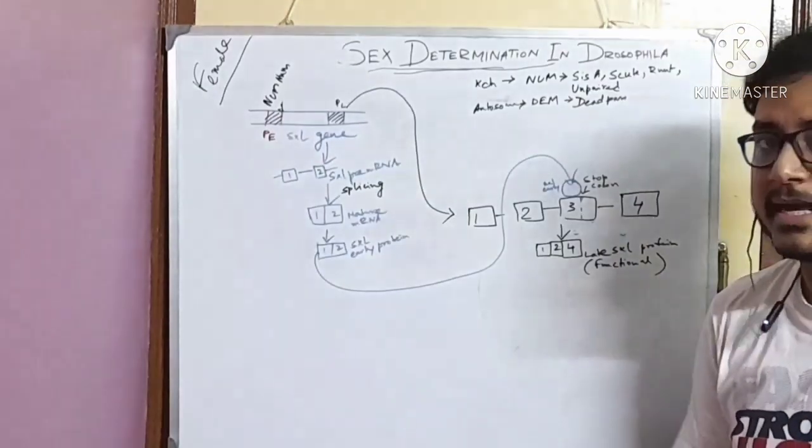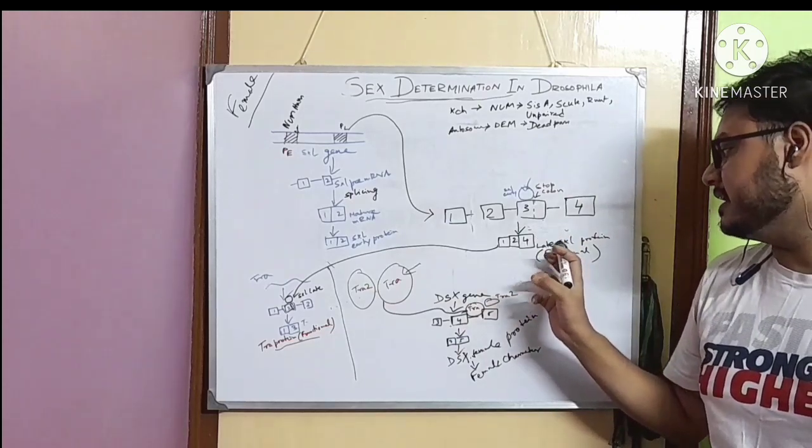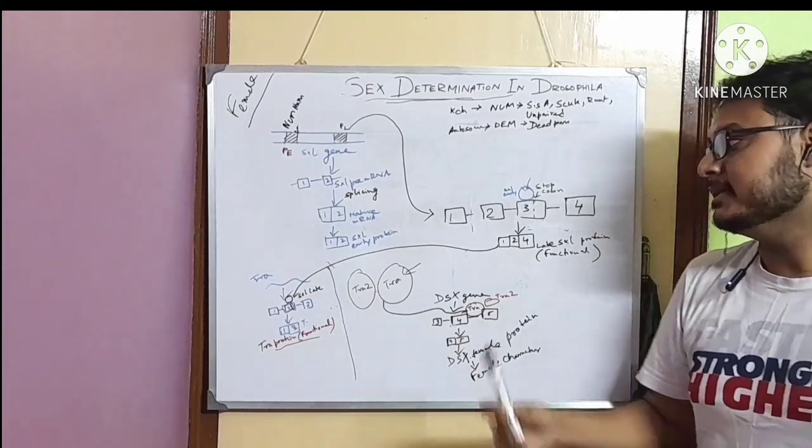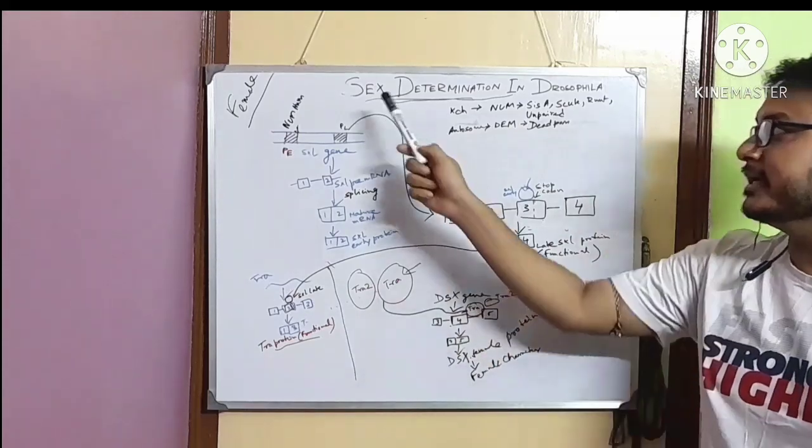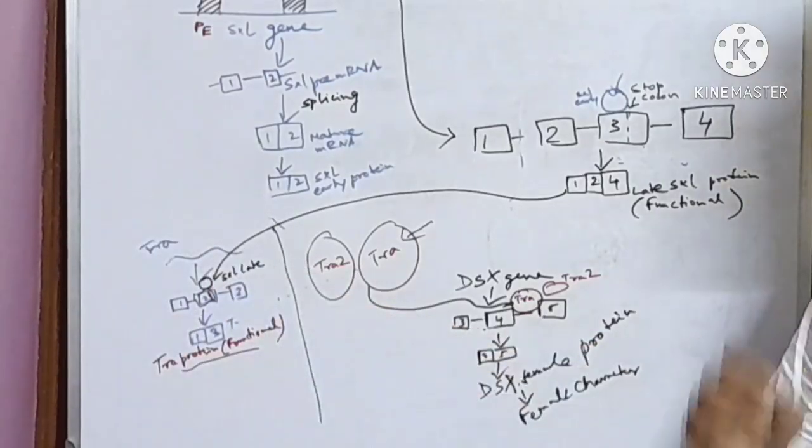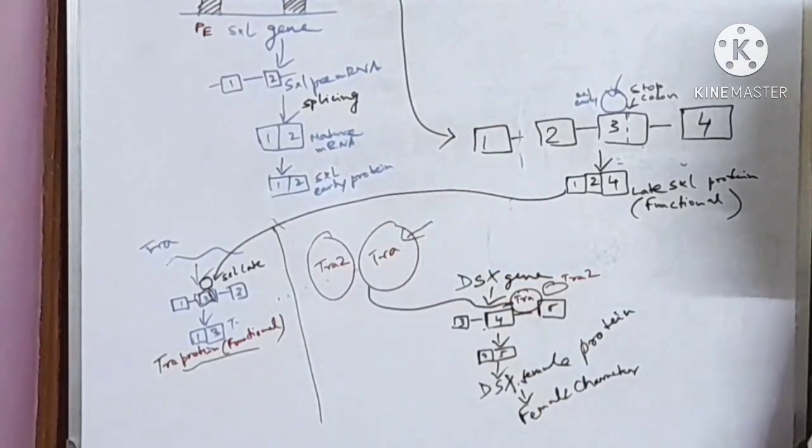Now, what happens next? After the production of functional SXL late protein, another gene that plays an important role in sex determination of Drosophila comes. That is called TRA protein. TRA stands for transformer protein.